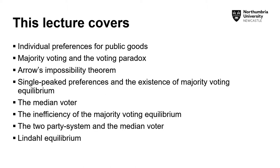Specifically, what this lecture covers is individual preferences for public goods, majority voting and the voting paradox, Arrow's impossibility theorem, single peak preferences and the existence of majority voting equilibrium, the median voter, the inefficiency of the majority voting equilibrium, the two-party system and the median voter, and the Lindahl equilibrium.